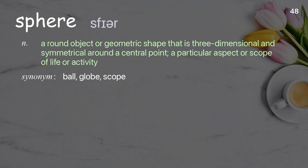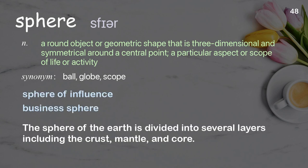Sphere: a round object or geometric shape that is three-dimensional and symmetrical around a central point; a particular aspect or scope of life or activity. Examples: sphere of influence, business sphere. The sphere of the earth is divided into several layers, including the crust, mantle, and core.